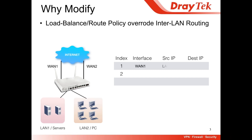The first rule says: when LAN1 goes to any destination, send through WAN1. And the second policy says: when LAN2 goes to any destination, go through WAN2. So it's a very basic load-balance scenario.